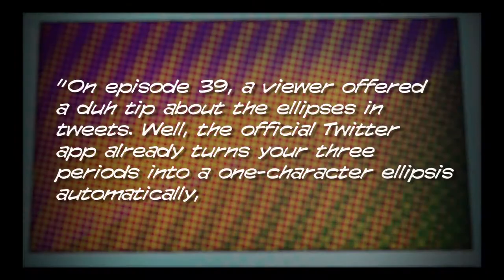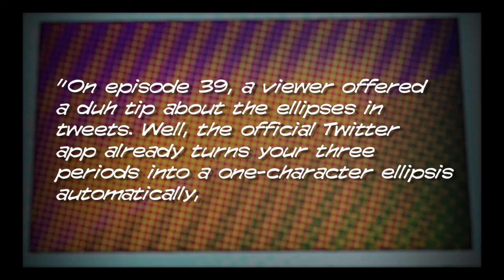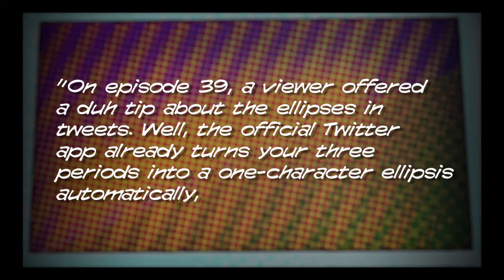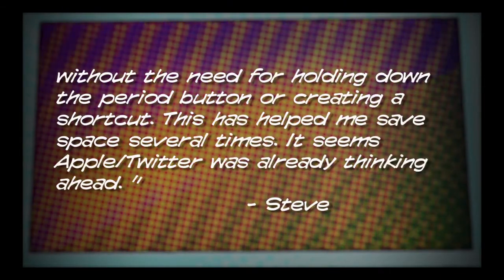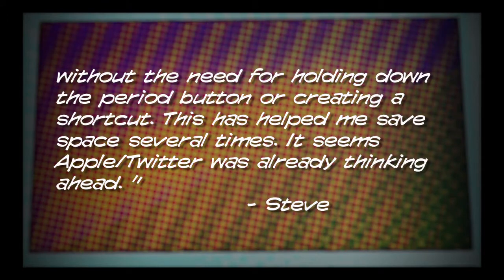One more thing before we go: an email from Steve, who writes that on episode 39 a viewer offered a tip about ellipses in tweets. The official Twitter app already turns three periods into a one-character ellipsis automatically, without needing to hold down the period button or create a shortcut. This has helped him save space several times. Even though I use Tweetbot, it's nice to know where Twitter's iOS integration has a leg up on its competitors.